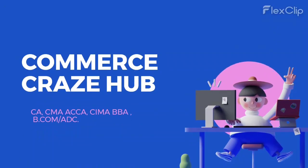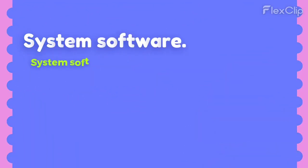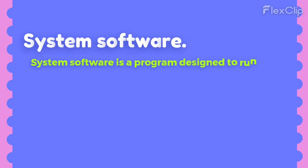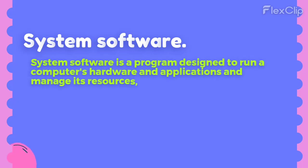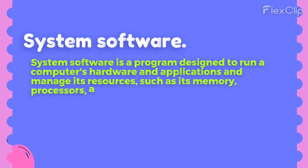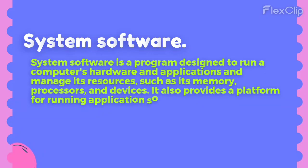Assalamualaikum, Commerce CrazeHub. Systems Software is a program designed to run a computer's hardware and applications and manage its resources, such as memory, processors, and devices. It also provides a platform for running application software.